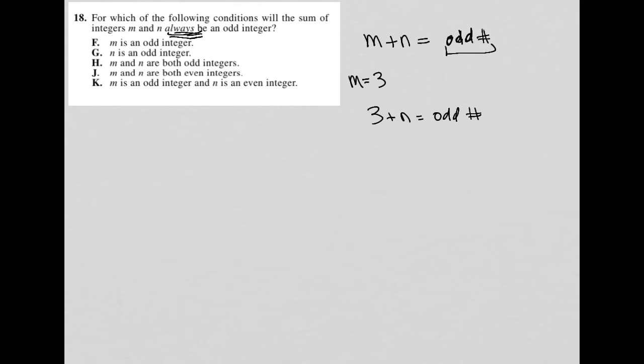So 3 plus n is odd. Well, how does that work, right? Is that always, is the fact that this is 3 make this situation always happen? Well, of course not, because n matters, right?